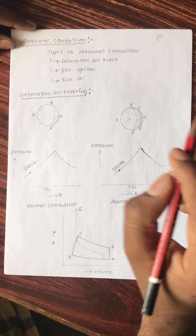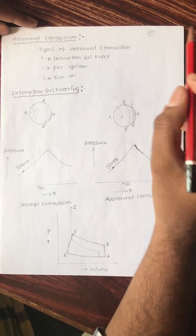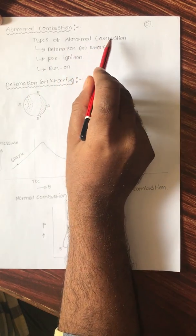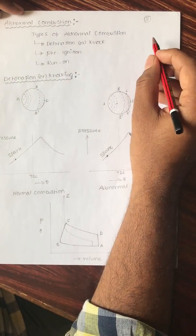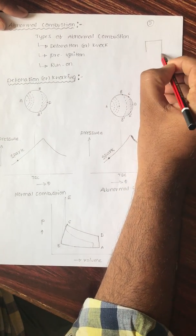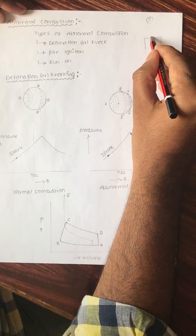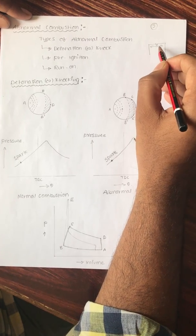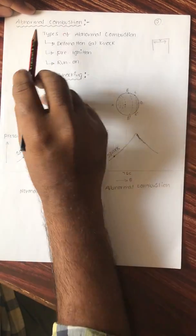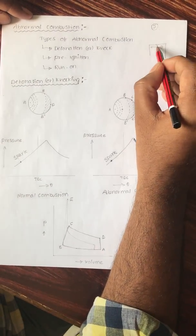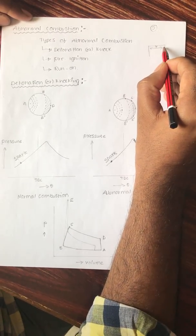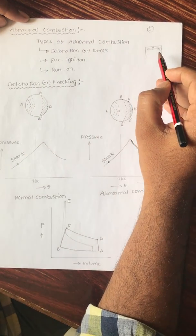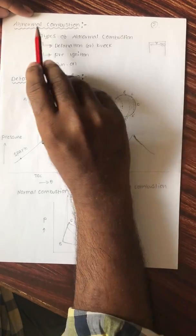Good morning. Welcome to this series of lectures on internal combustion engines. Today we are going to discuss abnormal combustion in SI engines, that is spark ignition or petrol engines. In normal combustion, the flame starts from the spark plug and burns all portions of the unburned mixture in a uniform manner. In abnormal combustion, by the time the flame reaches the end portion, that end portion creates one more flame, and these two flames collide, forming high-range noise — that is called abnormal combustion, increasing engine roughness.